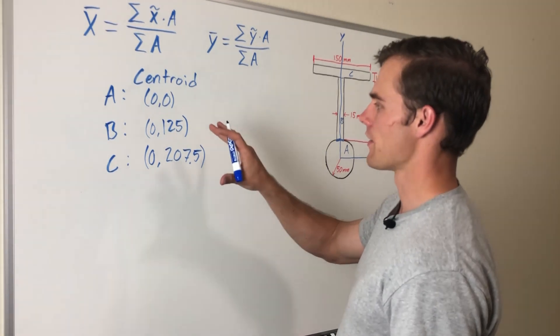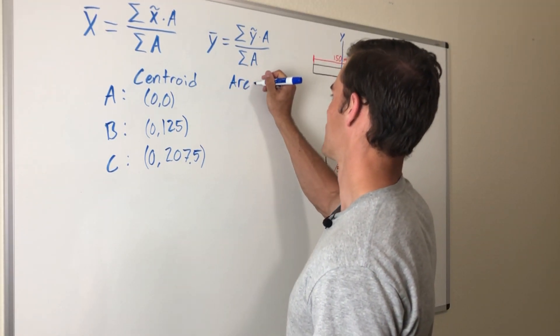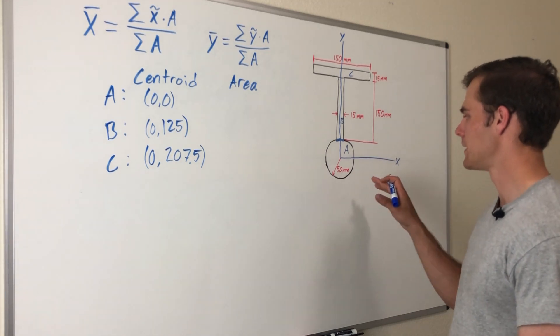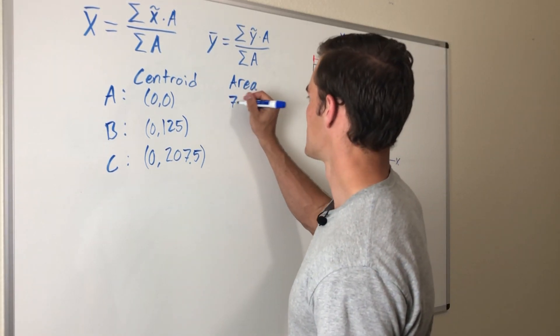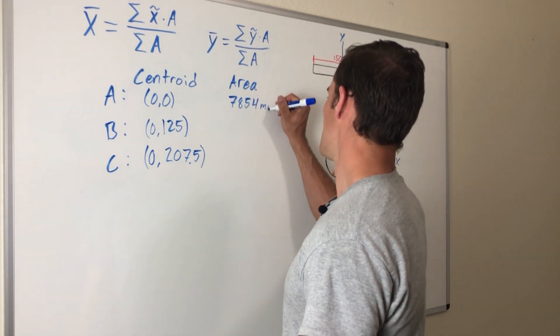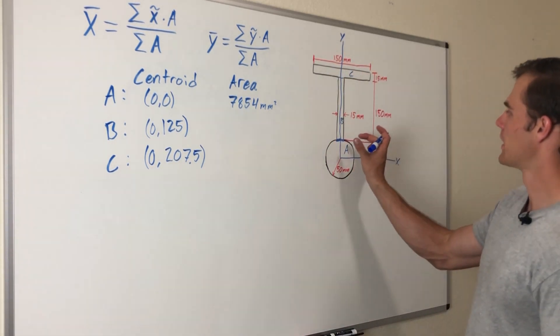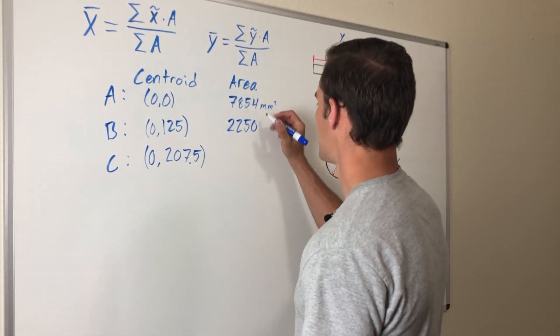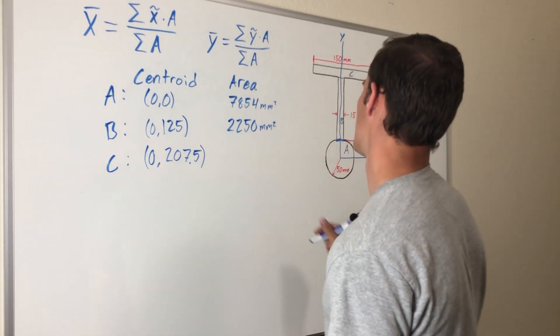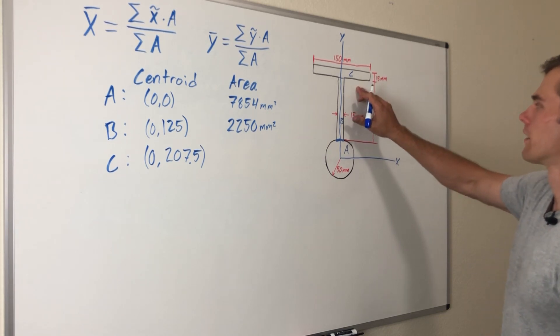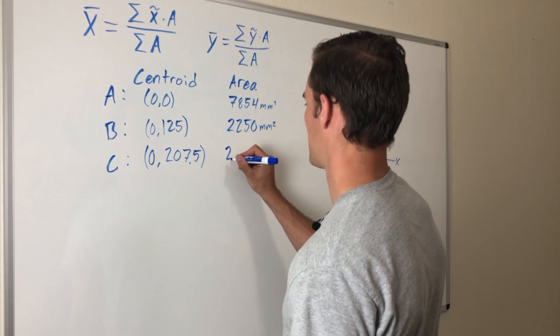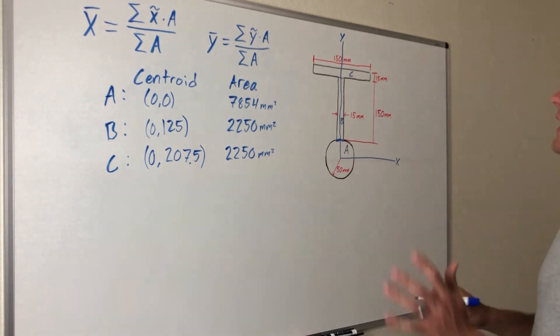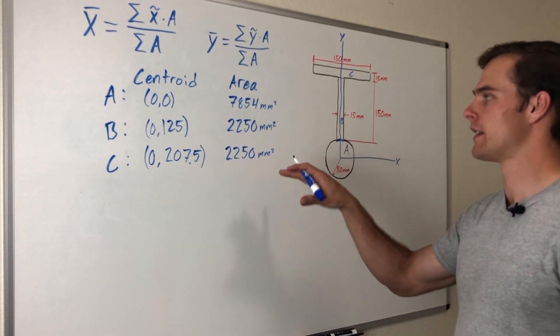Now that we found the centroid of all of them, we need to find the area of each composite part. For A, πr² equals π times 50² which is 7854 mm². Then B, the width times the height, so 15 times 150, that comes out to 2250 mm². You'll notice that rectangles B and C are the same size, so C also has an area of 2250 mm². Now that we've found those and written it out, this is how I like to do it—write it all out and tabulate it.